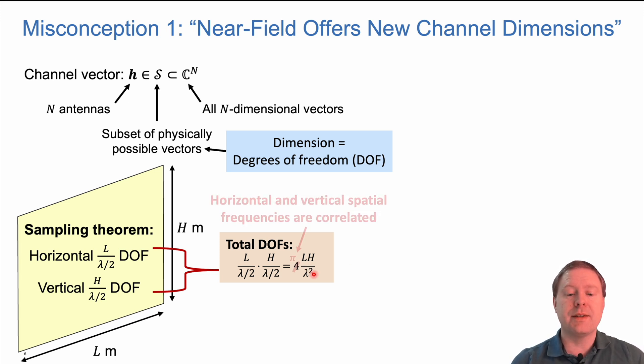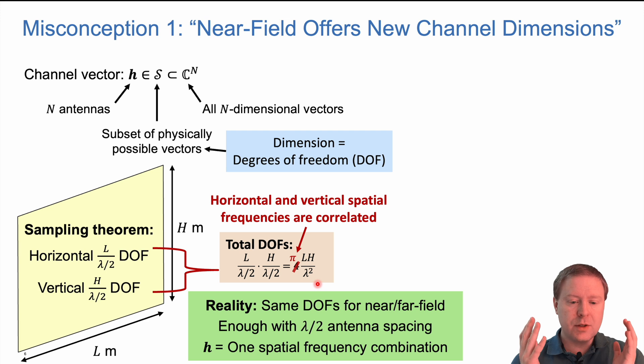But it actually turns out that the variations horizontally and vertically that a radio wave can create over a surface are not independent. So the factor is actually pi, not four. We multiply pi with the area l times h divided by the wavelength squared, and that is the total number of degrees of freedom we can resolve. The reality is that there is no notion of near field or far field here. Different kinds of channels will create different patterns over the receiver, being spherical or not. Near field or far field doesn't matter. The important thing is that we put our antennas lambda over two apart so we can utilize all of these degrees of freedom.